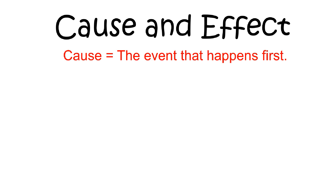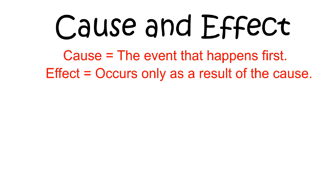Identifying a cause and effect relationship can be made easier when you remember that the cause happens first. The effect will always occur second, and only as a result of the first event, the cause.